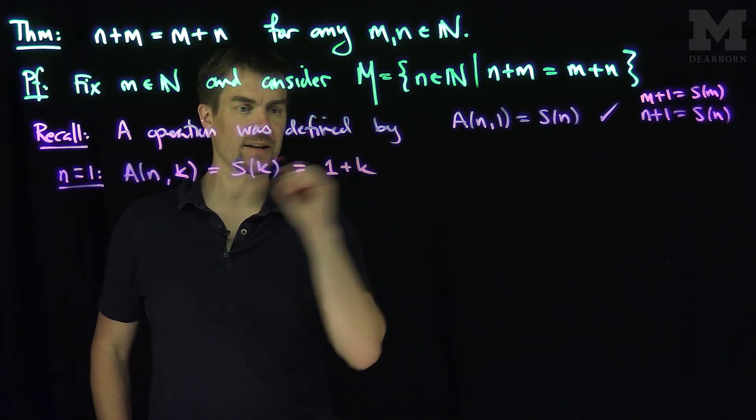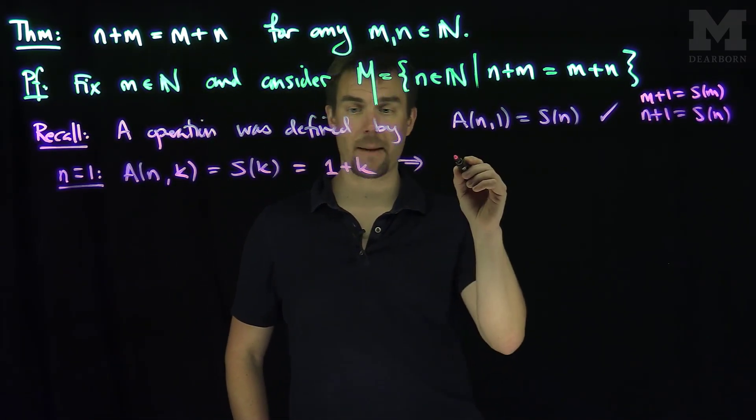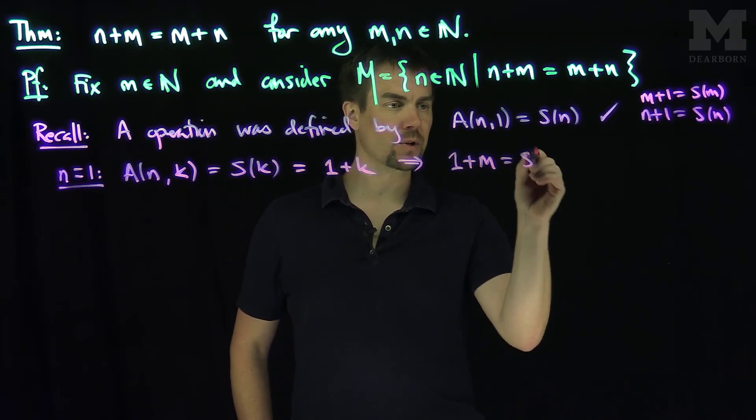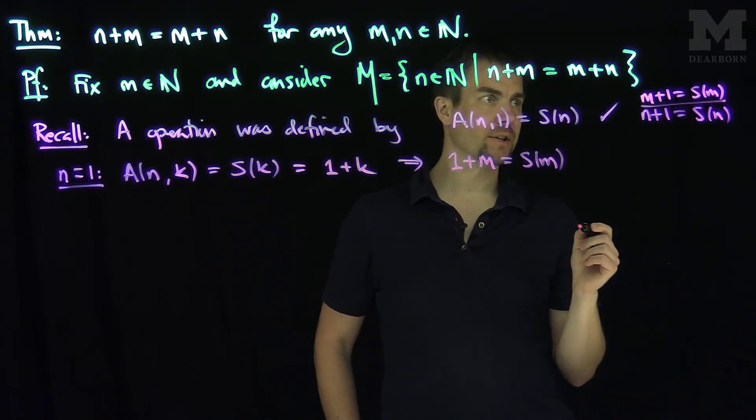When n is equal to 1, this tells me that 1 plus k is the successor of k for any values of k. So in particular, this is true when k is equal to m, so that 1 plus m is equal to the successor of m.